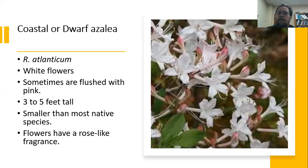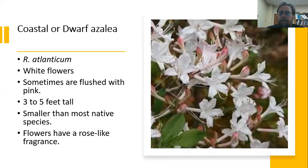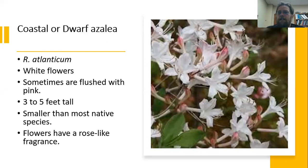If we want a smaller plant, this is the coastal or dwarf azalea, R. atlanticum. White flowers, some with a little bit of a pink flush, and this is a much more compact plant at about three to five feet tall. One thing I find really attractive is that the aroma of the flowers is very rose-like, adding a really pleasant fragrance to the landscape.